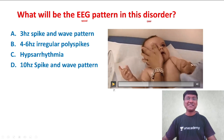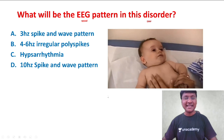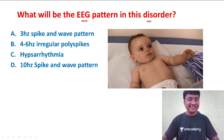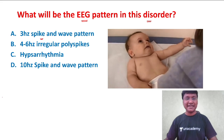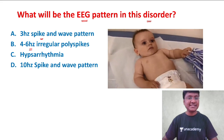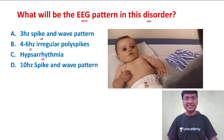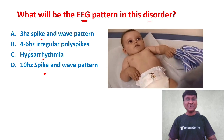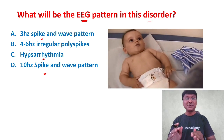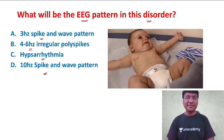I hope you were able to appreciate that particular abnormality in the clip. The options given are: three hertz spike and wave pattern, four to six hertz irregular poly spikes, hypsarrhythmia, and ten hertz spike and wave pattern. First of all, you should be able to diagnose that particular clinical condition, then only you will be able to answer this.